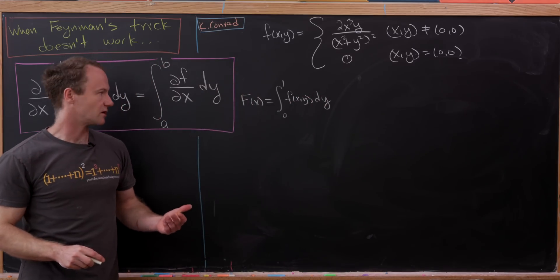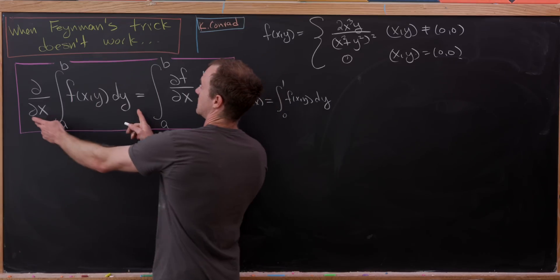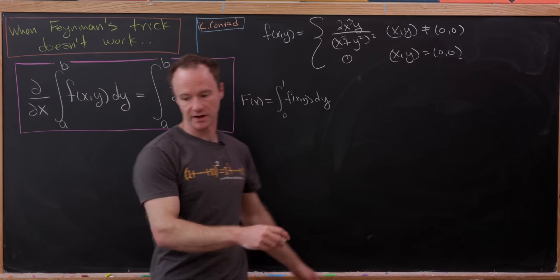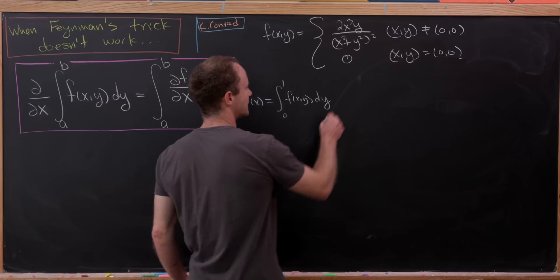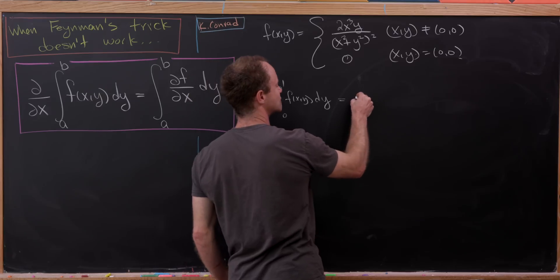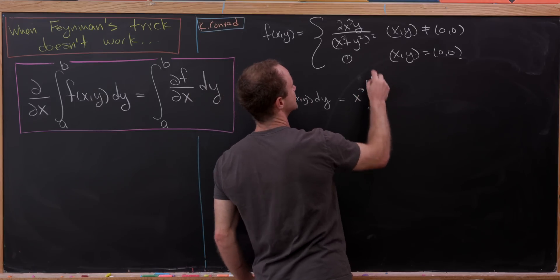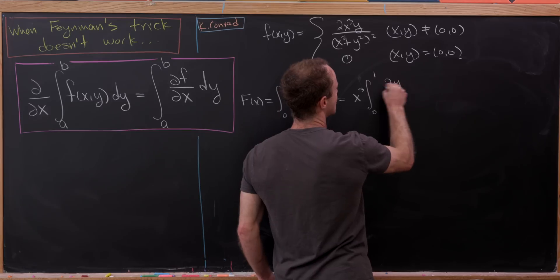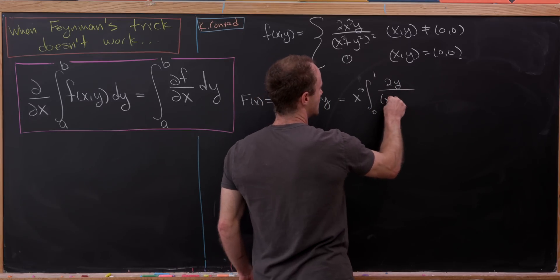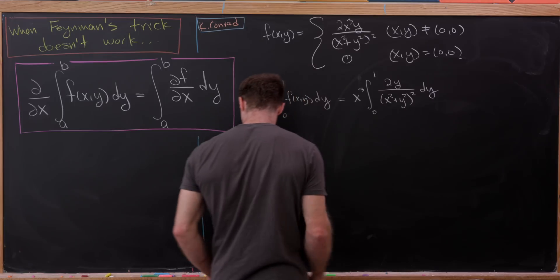We're going to eventually want to look at F prime of x, because that'll be this left hand side. If we were to do this, we can bring an x cubed out, and then we have the integral from zero to one of two times y over x squared plus y squared all squared dy.